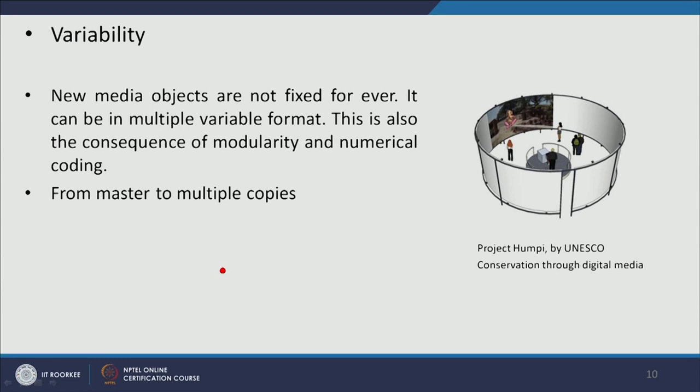From the mother copy we can make many different copies and change the format of those copies. For example, when a movie releases it can also be seen on mobile — it can be transformed to fit the screen of a particular aspect ratio. In flights there are movie display systems where the movie is digitally modified to fit that display system.